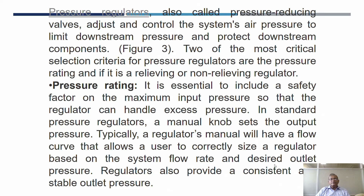The pressure regulator may also be called a pressure reducing valve. It adjusts and controls the system's air pressure to limit the downstream pressure. Some systems may require 5 bar, some may require 8 bar, and some may require 2 bar — accordingly, you have to set the pressure using a regulator.